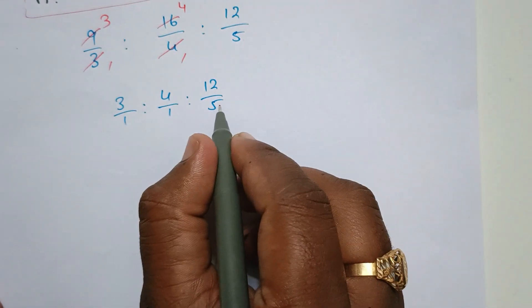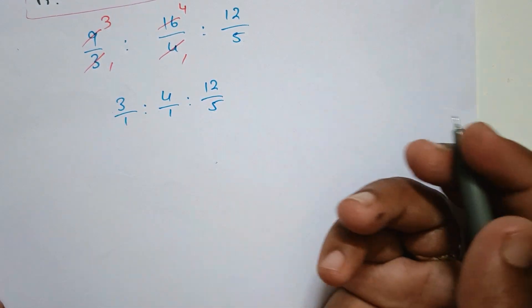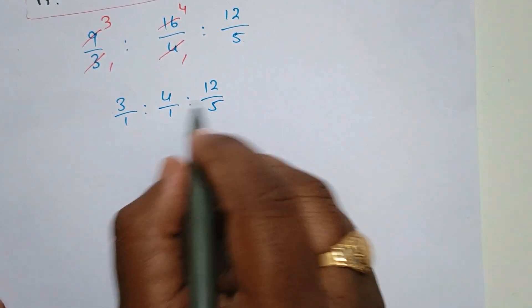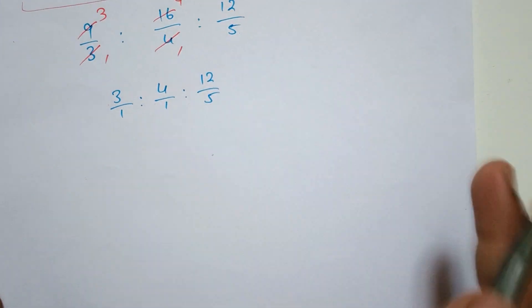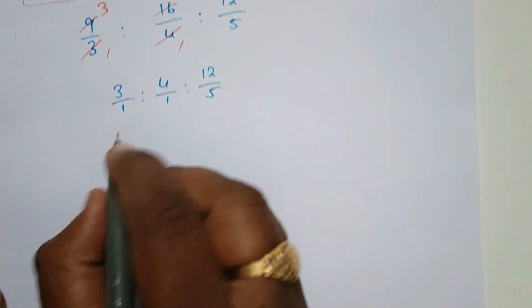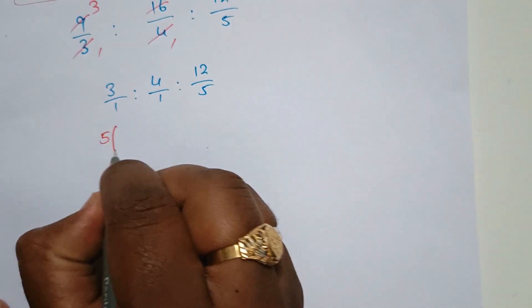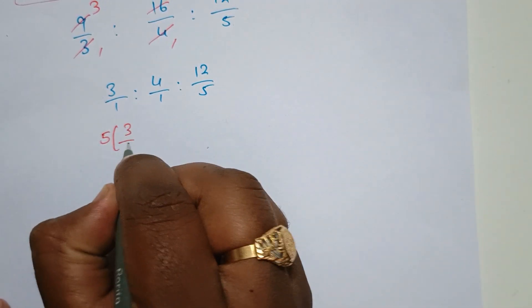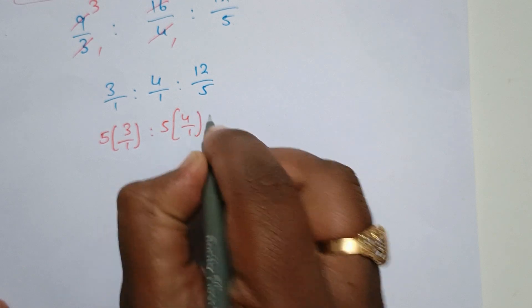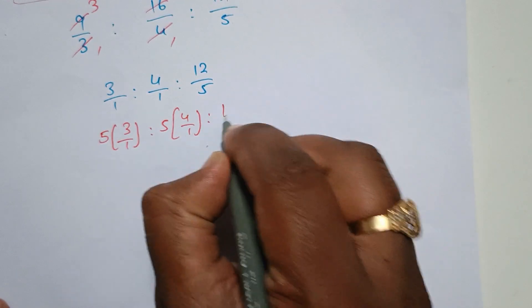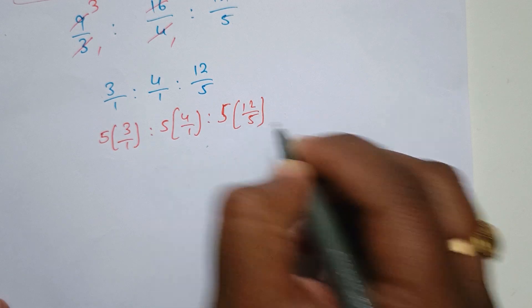The remaining numbers. The common LCM is 5. So: 5 into 3 by 1, is to 5 into 4 by 1, is to 5 into 12 by 5.